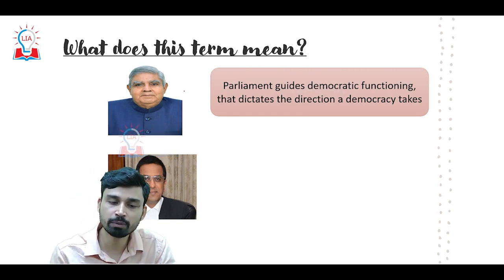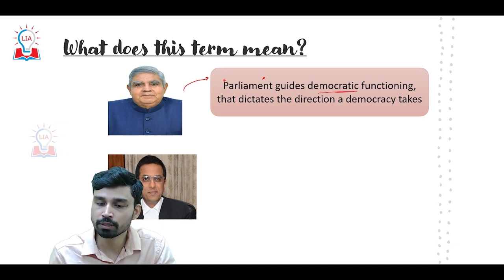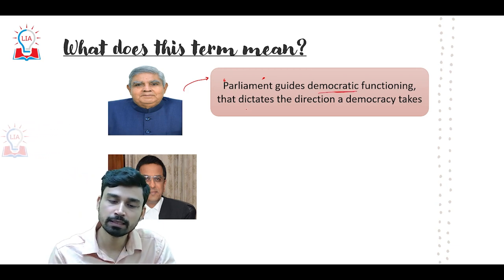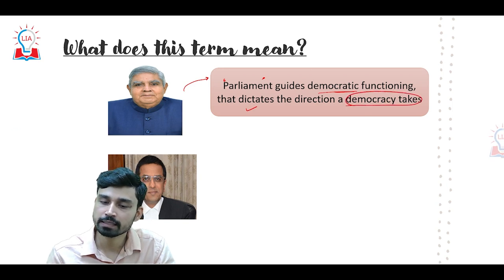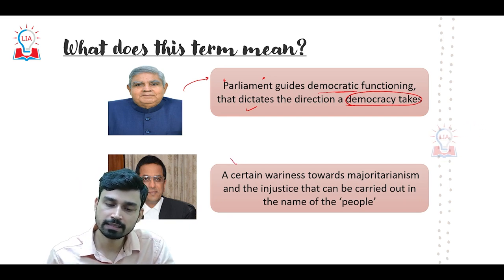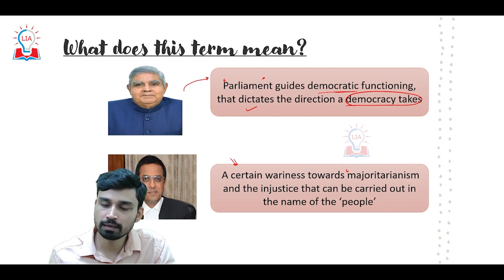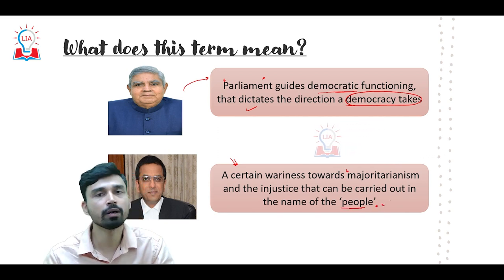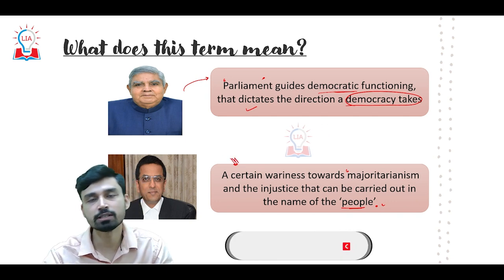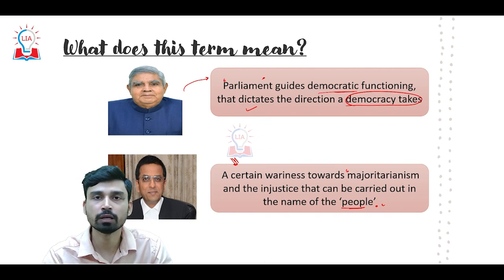As far as the Vice President's statement is concerned, he suggested that Parliament is a North Star because it guides the democratic functioning of a country and dictates the direction a democracy takes. The Chief Justice made his statement in the context of a certain weariness toward majoritarianism in our country and the injustice that can be carried out in the name of the people, stating that the basic structure doctrine should be considered the pole star of India.